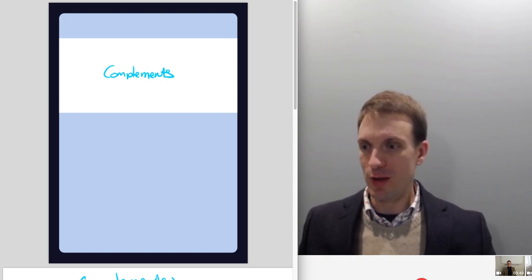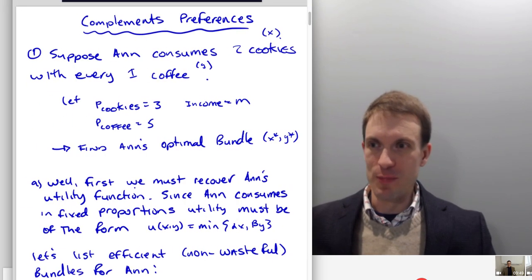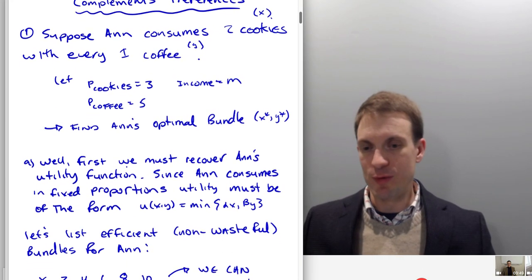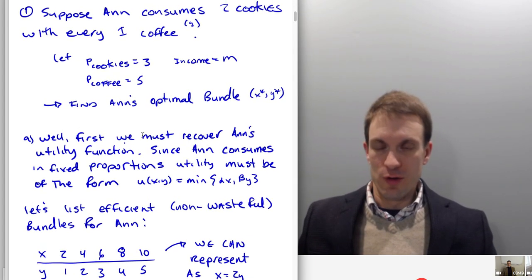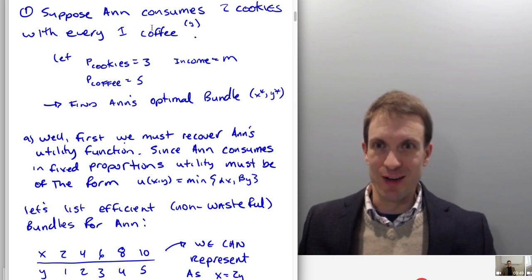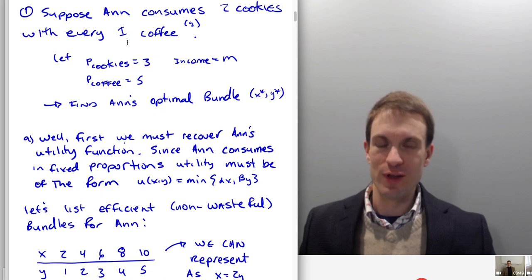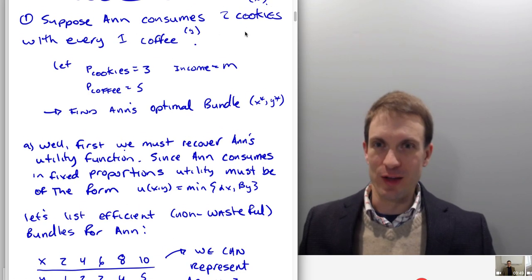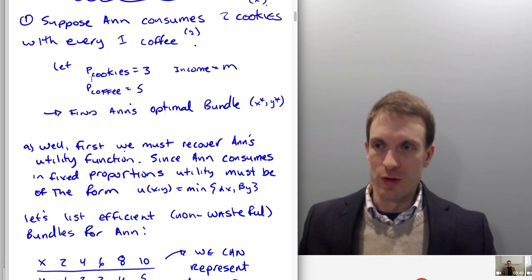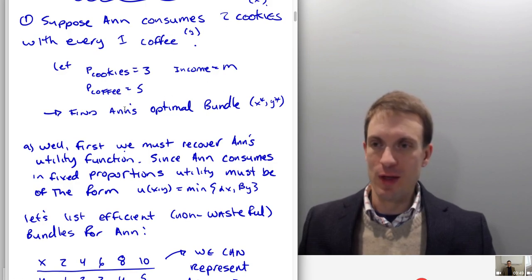So that's the generic complements preference structure. Let's see a numeric example — I'm going to build this up from scratch. Suppose Ann consumes two cookies with every one coffee. We'll make cookies x and coffee y. The price of cookies is three, the price of coffee is five, income is M. We want to find Ann's optimal consumption bundle x and y.